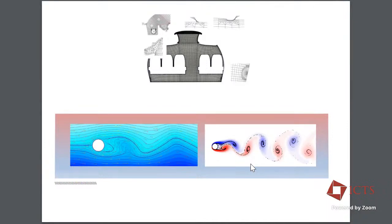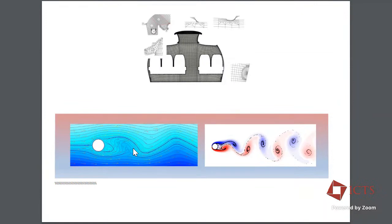Computational fluid dynamics can be used, for example, for the calculation of jet motion or supersonic airplanes. This is about the motion of liquids and gases around some obstacles. Here you can see this mathematical and computer simulation of such kind of motion.